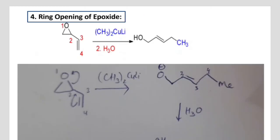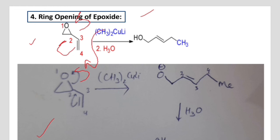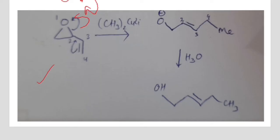Now we will study the ring opening of an epoxide. The Gilman reagent again attacks at the fourth position, and this bond shifts between carbon 2 and carbon 3. Again, this bond shifts onto the oxygen. If we number the atoms, oxygen is 1, then 2, 3, and 4.